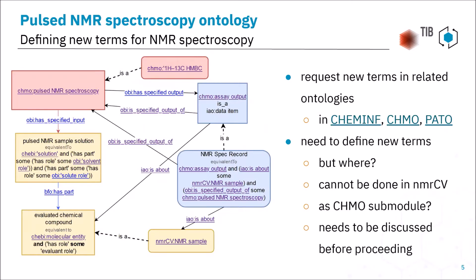NMR spectroscopy is special because there's also the NMR CV — a controlled vocabulary containing many terms we could reuse. However, if we want more depth in terms of axiomatization, this becomes problematic because NMR CV is by definition only a taxonomy and doesn't want to have axioms other than subclass-of axioms. There is still an open question whether it would be better to define those new classes not within a new ontology itself, but by extending CHMO and having a NMR spectroscopy submodule, since main classes like pulse NMR spectroscopy are already in CHMO.